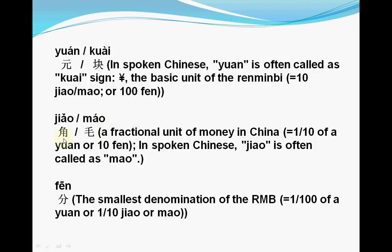The second unit of Chinese money is Jiao. Jiao. This is a fractional unit of Chinese money. Sometimes we call Jiao as Mao. Mao.